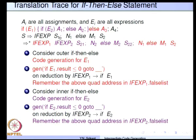At the high-level if-then-else, if-x derives if E1; S1 is the entire inner 'if E2 A1 else A2'; and S2 is A3. Expanding S1 gives: if-x2 S21 N2 else M2 S22, where S21 is A1 and S22 is A2. This is the partial derivation of our statement.